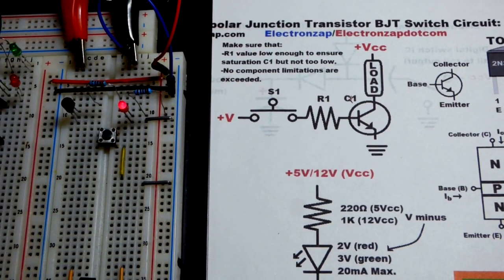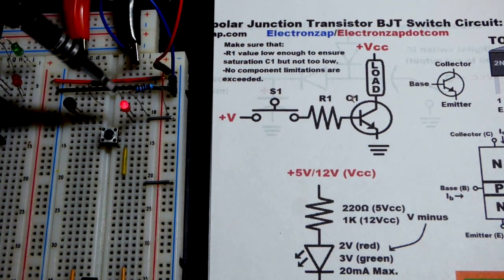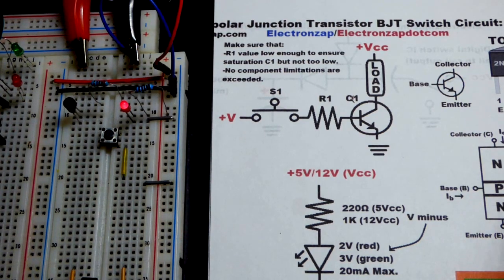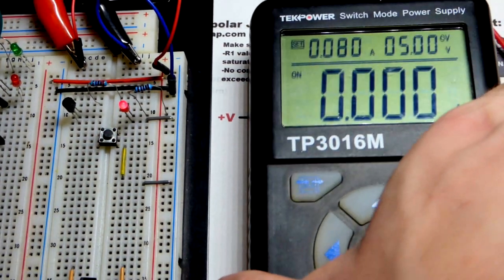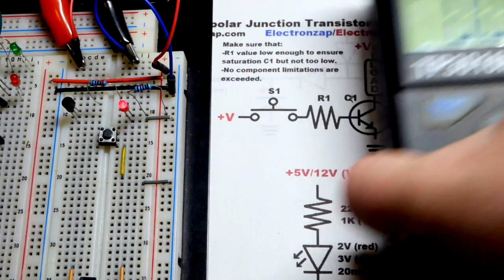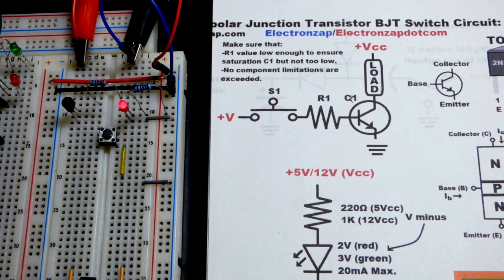So right now, we have a 10,000 ohm resistor protecting the LED, limiting the current through the LED. And it's less than 1 milliamp of current. Very little.